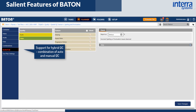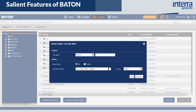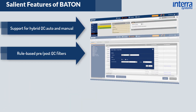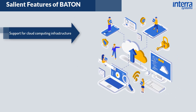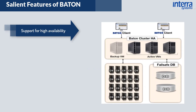Bayton supports hybrid QC, combining automated and manual QC checks for a well-integrated and efficient broadcast workflow. It also provides rich content-aware, rules-based pre/post QC filters, supports popular cloud computing infrastructure services, and offers a scalable architecture that lets users expand the Bayton farm as their QC needs grow, along with high availability to ensure the system continues even if one or more components are down.